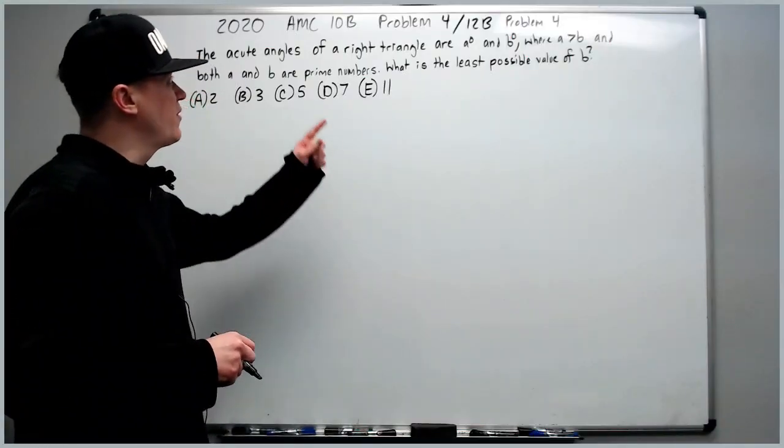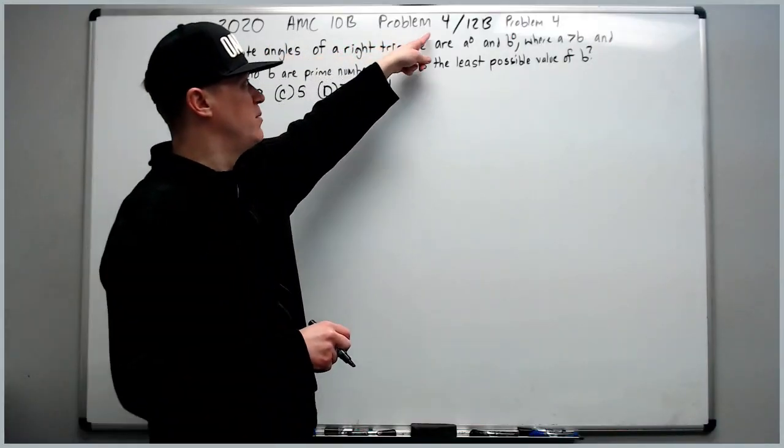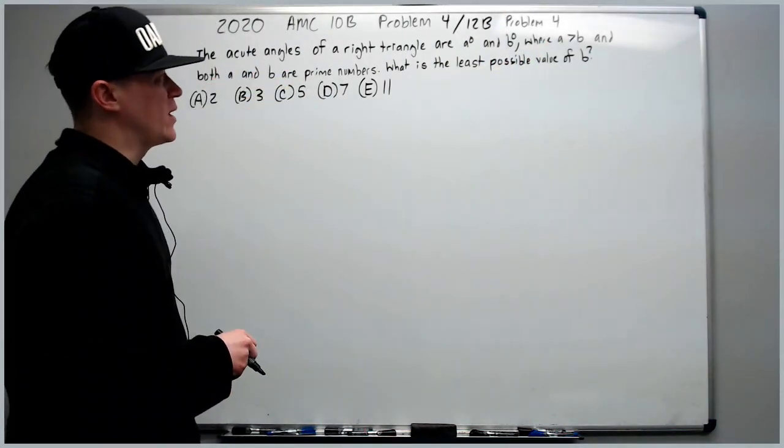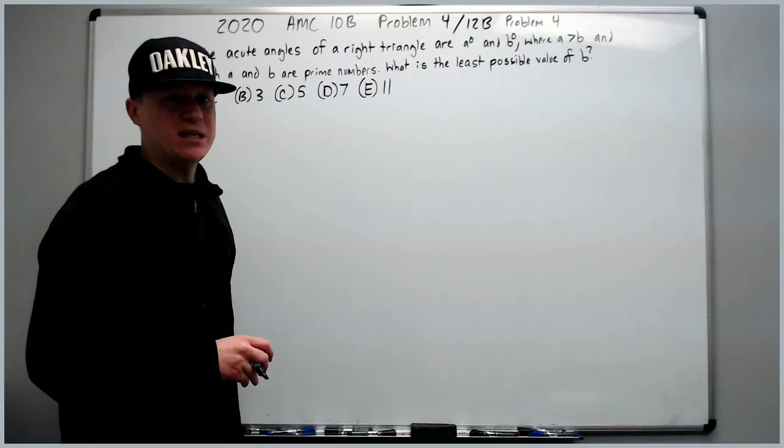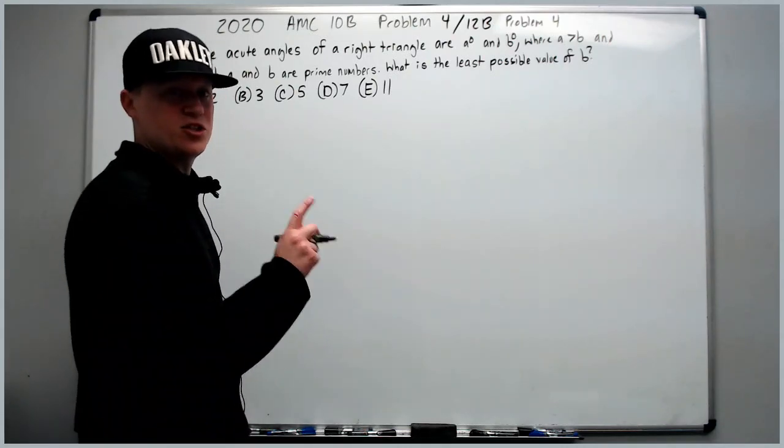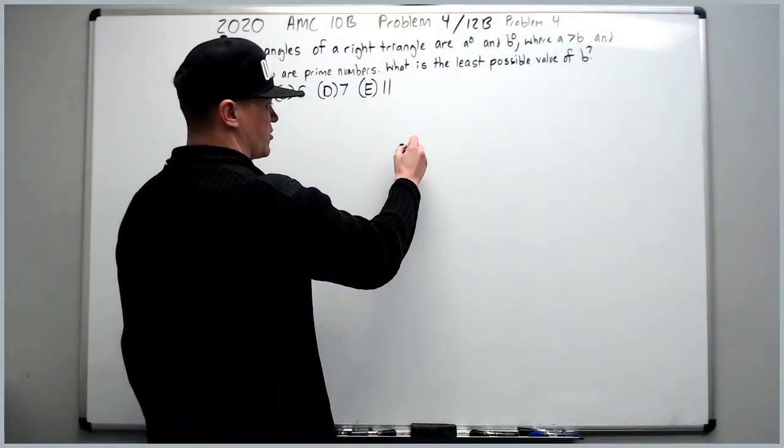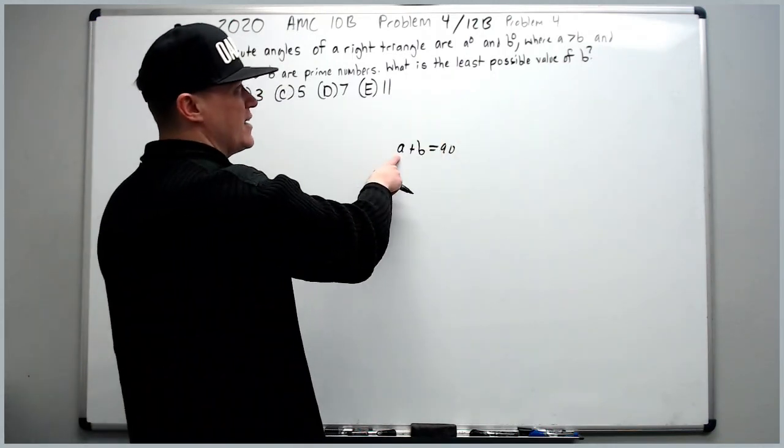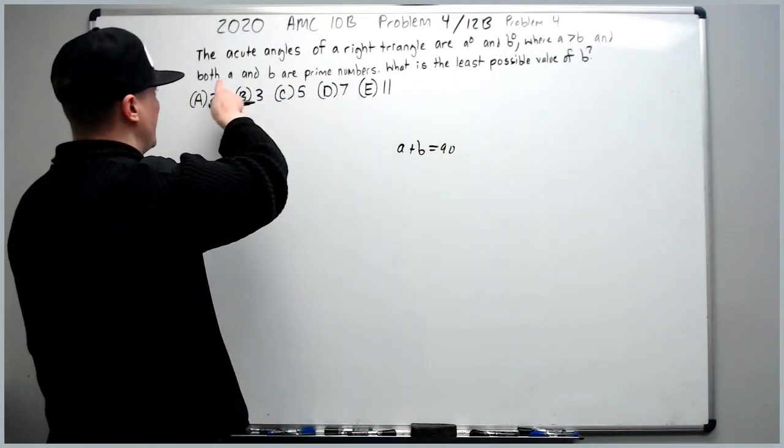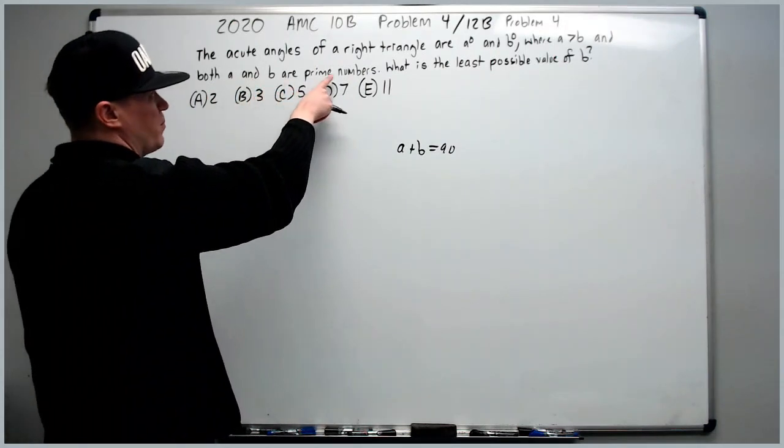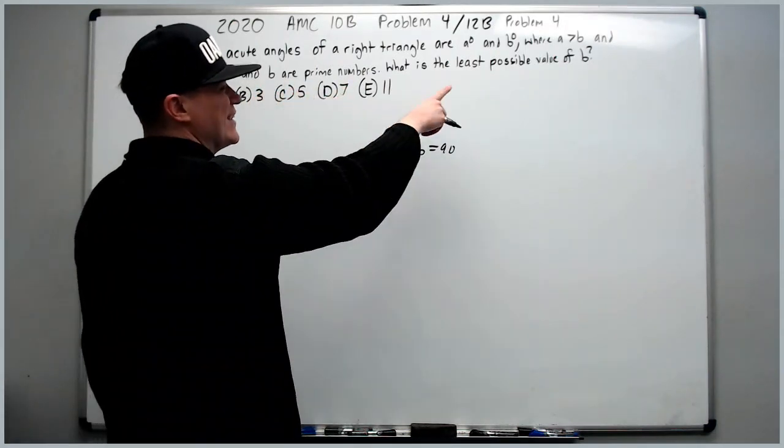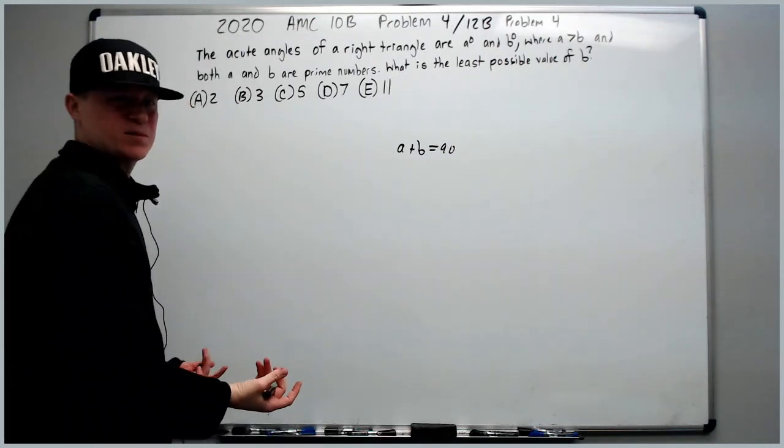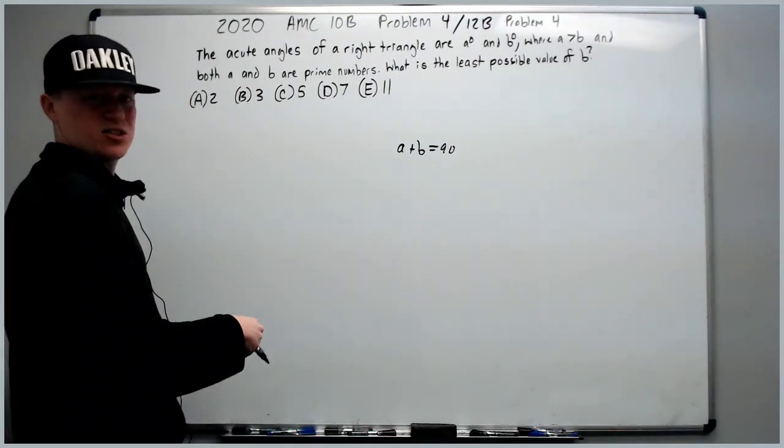Here we are at the 2020 10B problem 4, also the 12B problem 4. The acute angles of a right triangle are a degrees and b degrees. You should know that the acute angles of a right triangle add up to 90. a is greater than b, and both a and b are prime numbers. What is the least possible value of b? Because we want the least possible value, we should probably use the solutions to help us out.